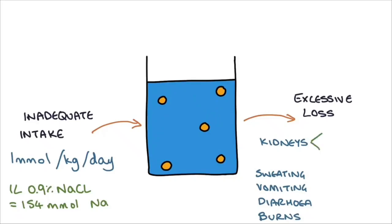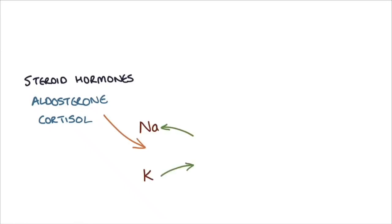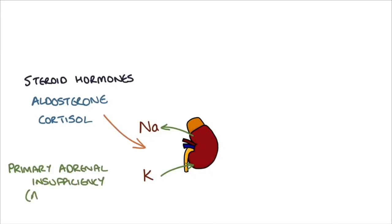There are two main ways that sodium is lost through the kidneys. First, it can be a shortage of steroid hormones, and second, it can be through the use of medications such as diuretics. If you remember your physiology, steroid hormones such as aldosterone and to a lesser extent cortisol cause sodium reabsorption and potassium excretion in the kidneys. In conditions like primary adrenal insufficiency or Addison's disease, there is a deficiency in these steroid hormones and this prevents adequate reabsorption of sodium in the kidneys.